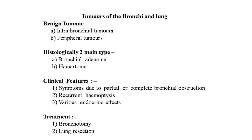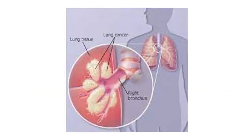Tumors of the bronchi and lungs — benign tumors: these include intrabronchial and peripheral tumors. Histopathologically, two main types: bronchial adenoma and hamartoma. Clinical features: symptoms due to partial or complete bronchial obstruction, recurrent hemoptysis, and various endocrine effects. Treatment: bronchotomy and lung resection. Here is a clear picture showing a tumor of the bronchi.